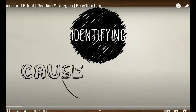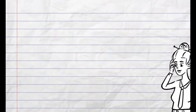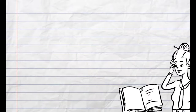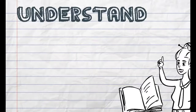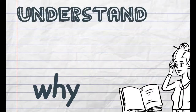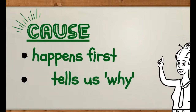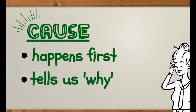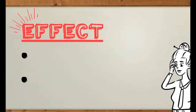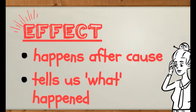Identifying cause and effect in texts is important, as it helps us to understand the events that are happening — what's happening and why it's happening. A cause happens first; it's why something happens. To find the cause, ask: why did this happen? An effect happens after the cause. It tells us what happened.